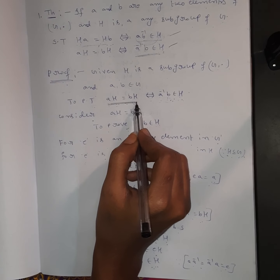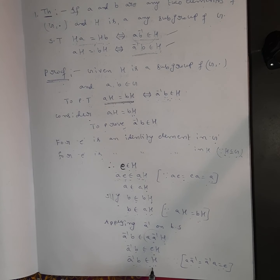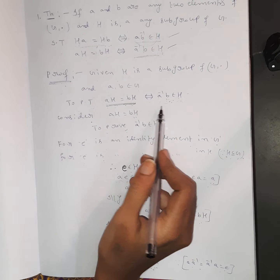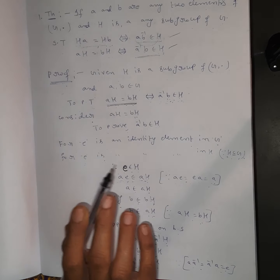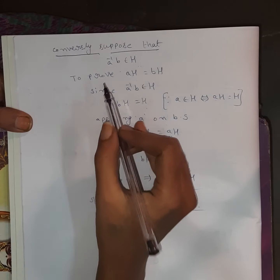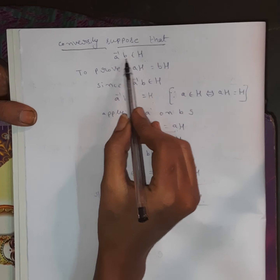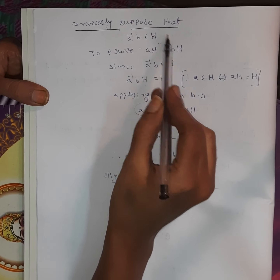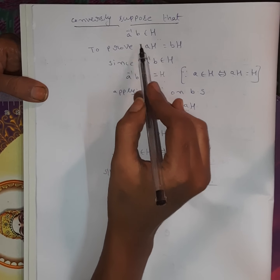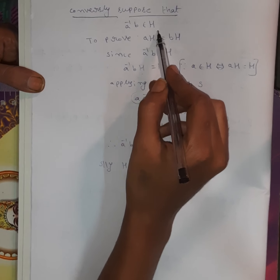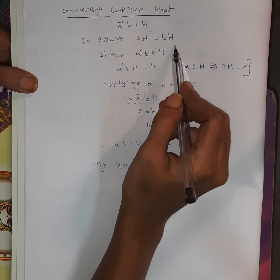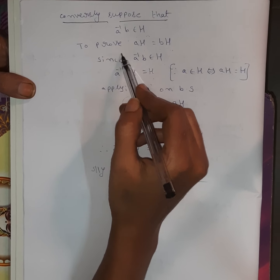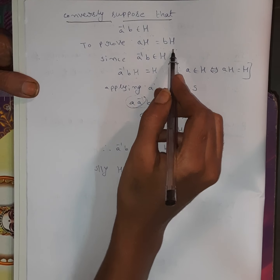So from AH equals BH we have proved A⁻¹B belongs to H. Conversely, suppose A⁻¹B belongs to H. We now prove AH equals BH.